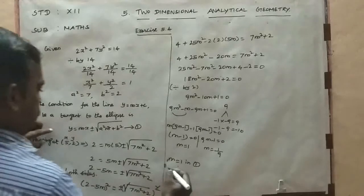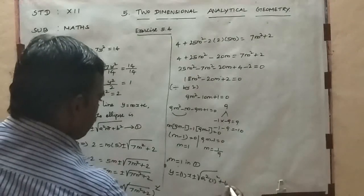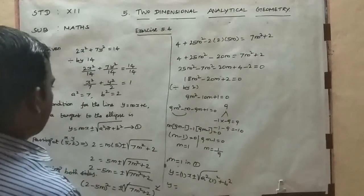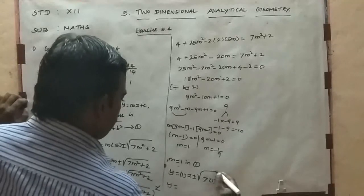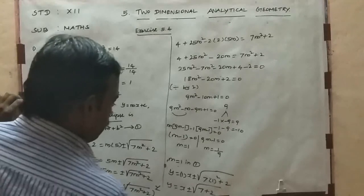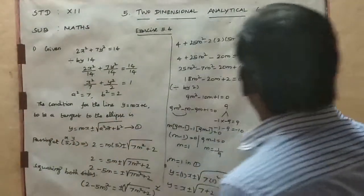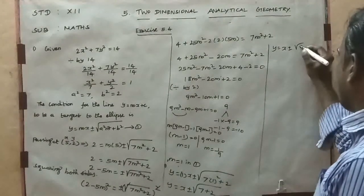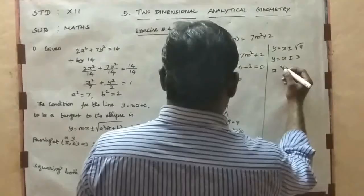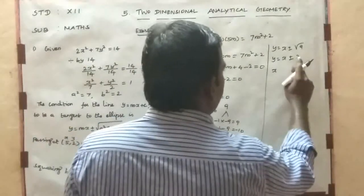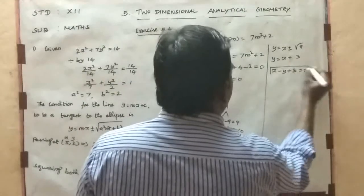Substituting m = 1 into equation 1: y = (1)x ± √(7(1)² + 2) = x ± √9 = x ± 3. So y = x + 3 or y = x − 3. Taking x − y + 3 = 0, that is one of the tangent equations.